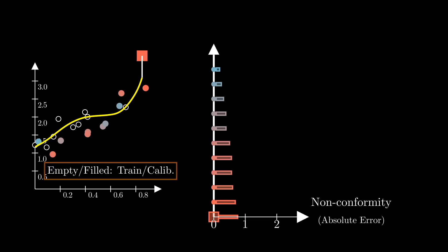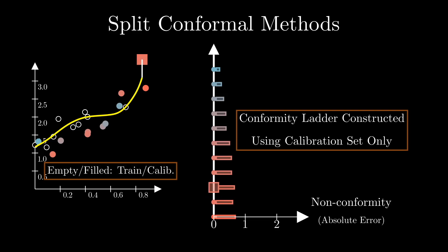What we can do instead is to exclude more points from the bag used for fitting. In other words, use only some of the points to fit the model - that is the white empty dots here - and use all the other points, the filled dots, to construct the ladder and to compare the non-conformities. This is exactly what split conformal methods do. They split the data into a training set and the calibration set, use the training set to fit the model, and only the calibration set to construct the conformity ladder. In other words, to compare the non-conformities.